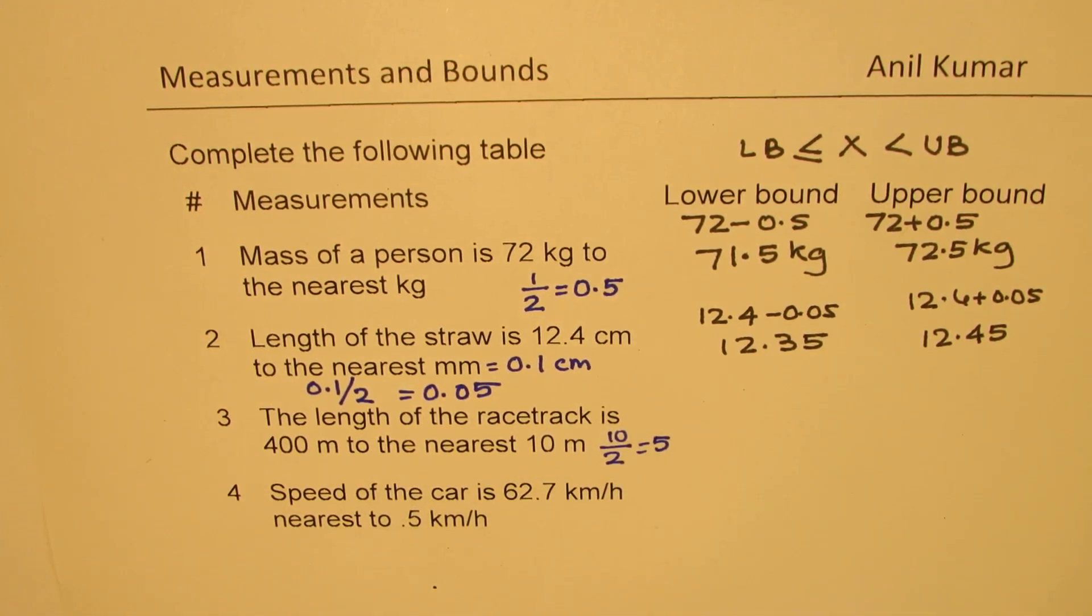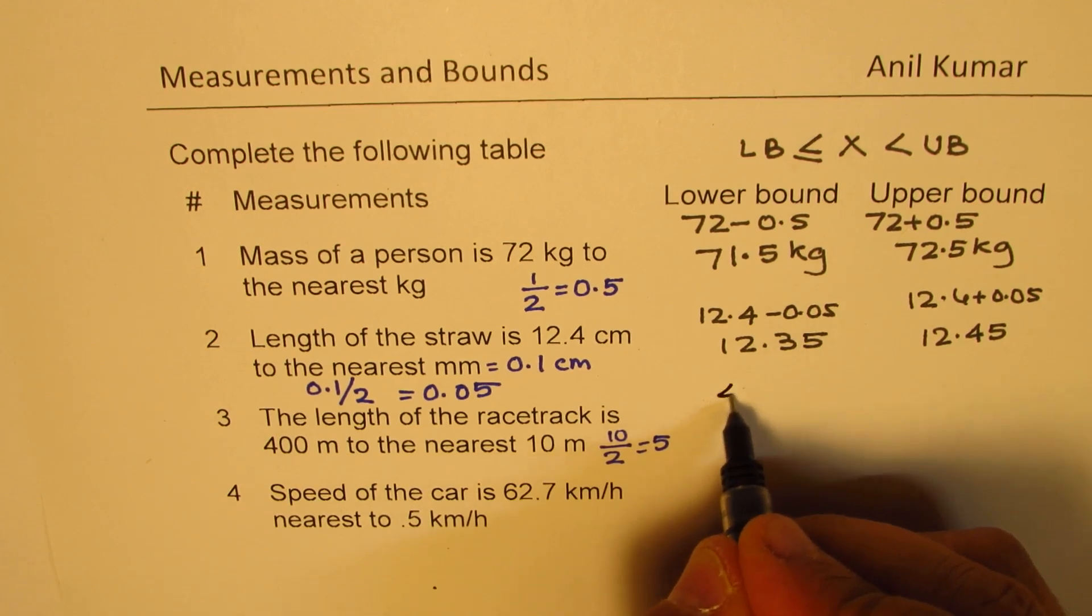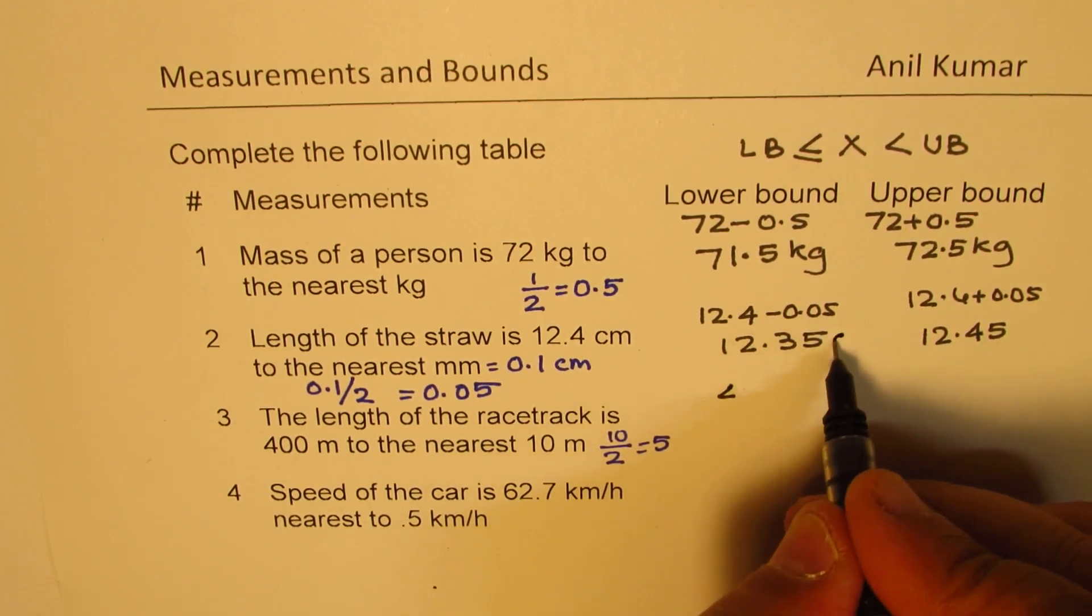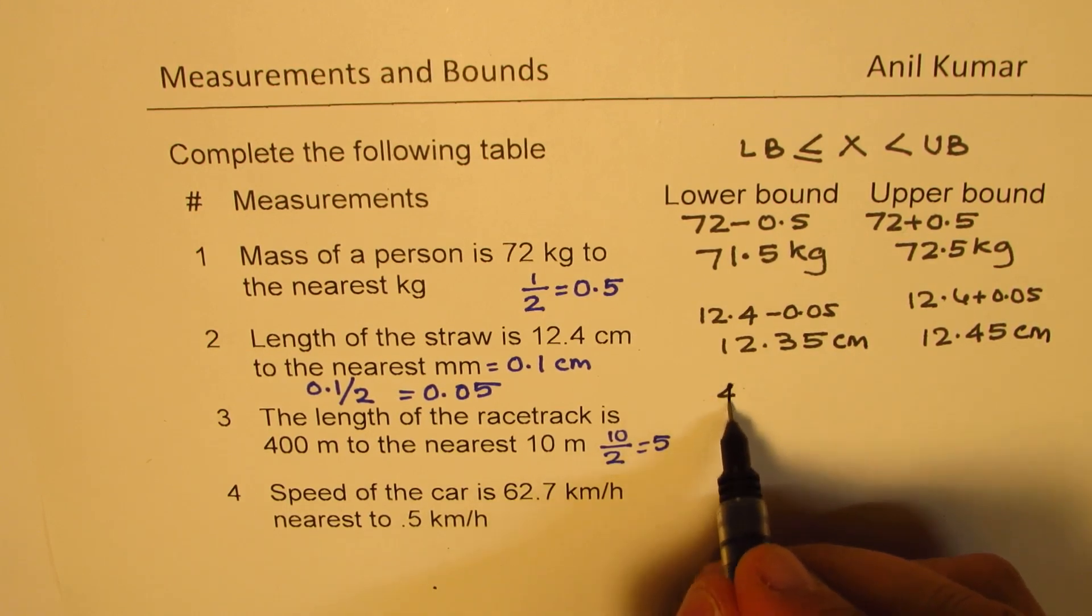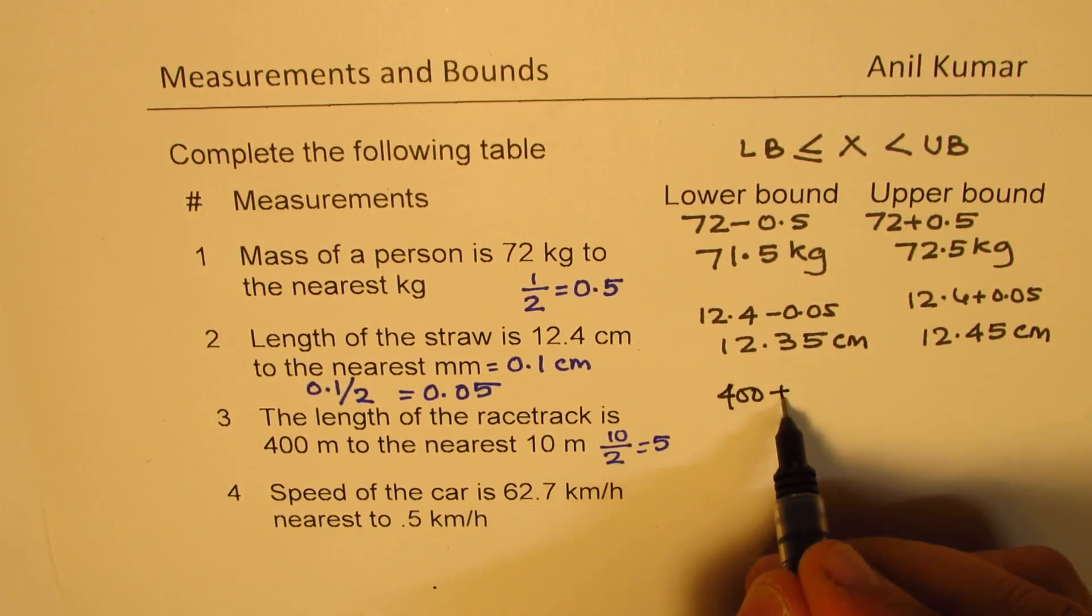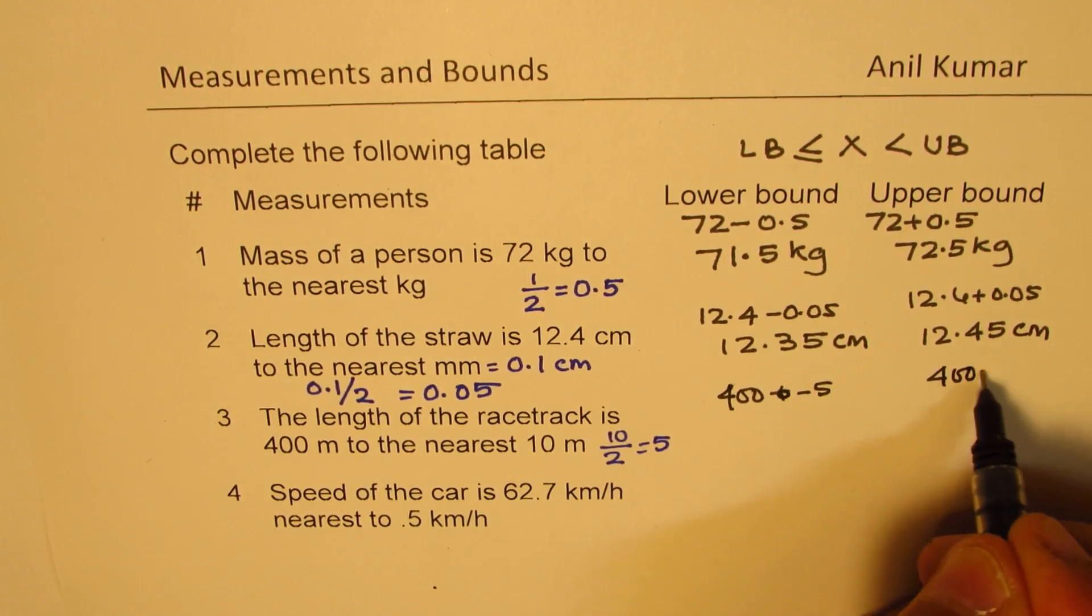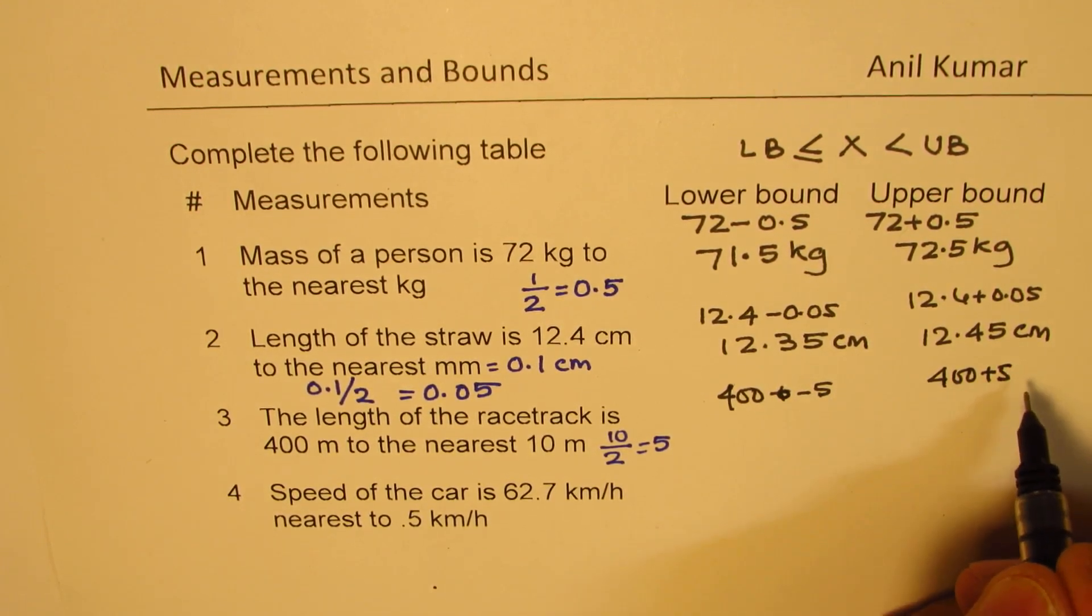So we have to add and subtract 5 in this case. So it becomes, well, let me write here centimeters. Now, so it becomes 400 minus 5 for the lower bound, and 400 plus 5 for the upper bound.